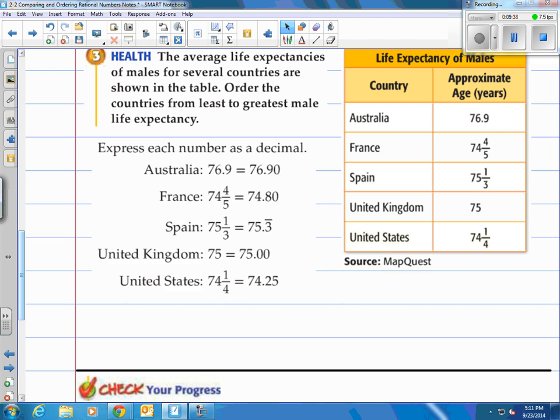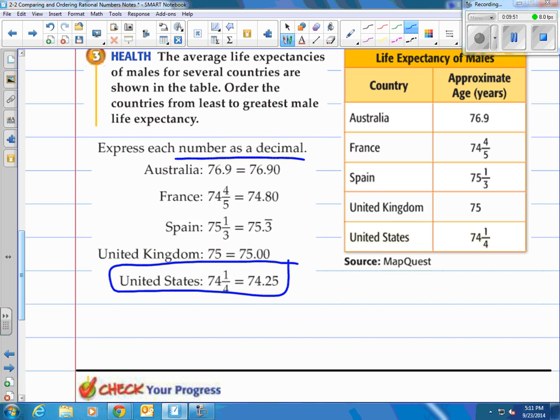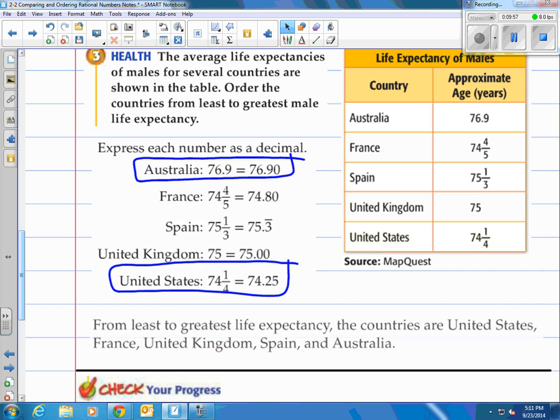So if you look, which one's the least here? Well, that's going to be this right here, 74.25. It doesn't look so good for us here in the United States. And then what's the largest? Well, it's going to be 76.90. Of course, then you put these in order, and you'll notice that it says it goes from the United States, France, United Kingdom, Spain, and then Australia. Easy to compare decimals. Just remember to line up your decimals when you compare.